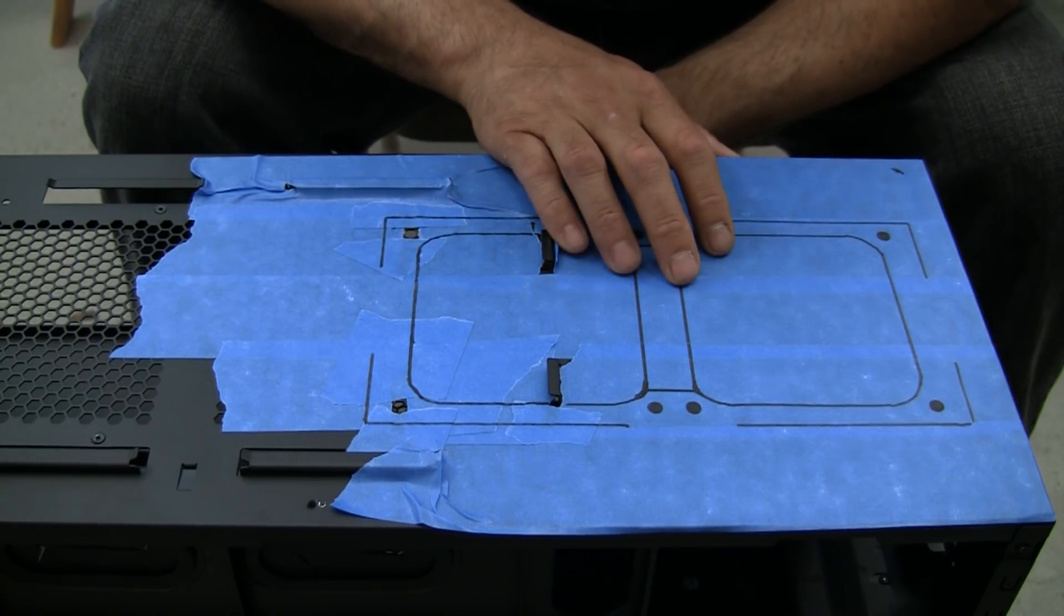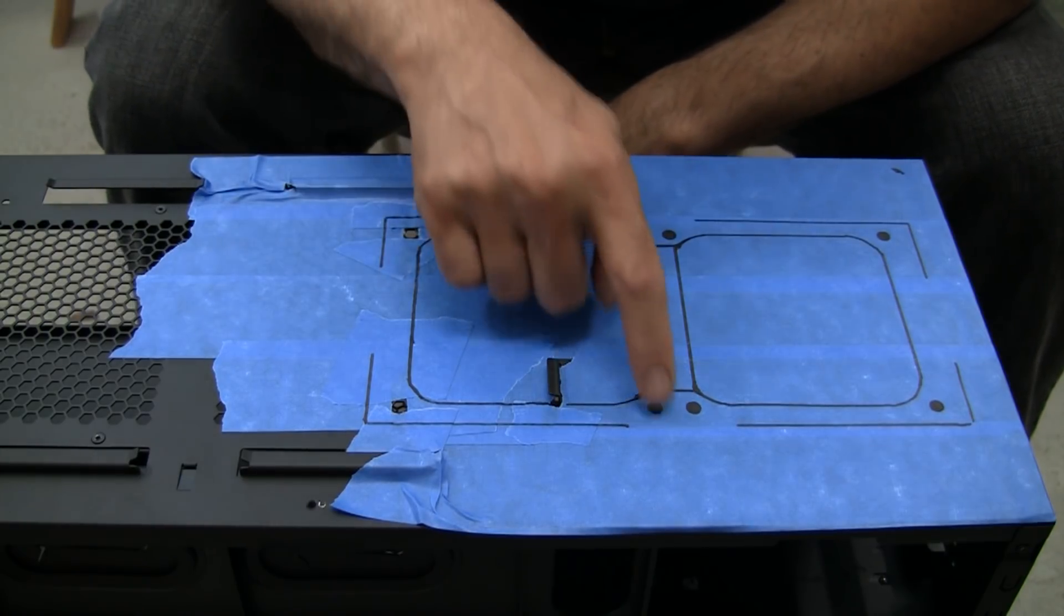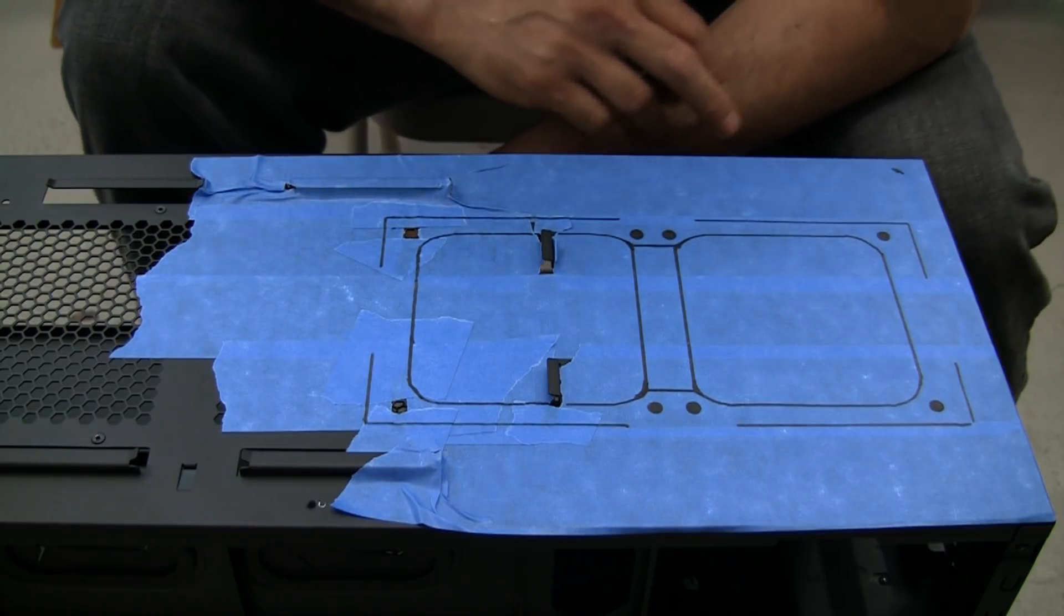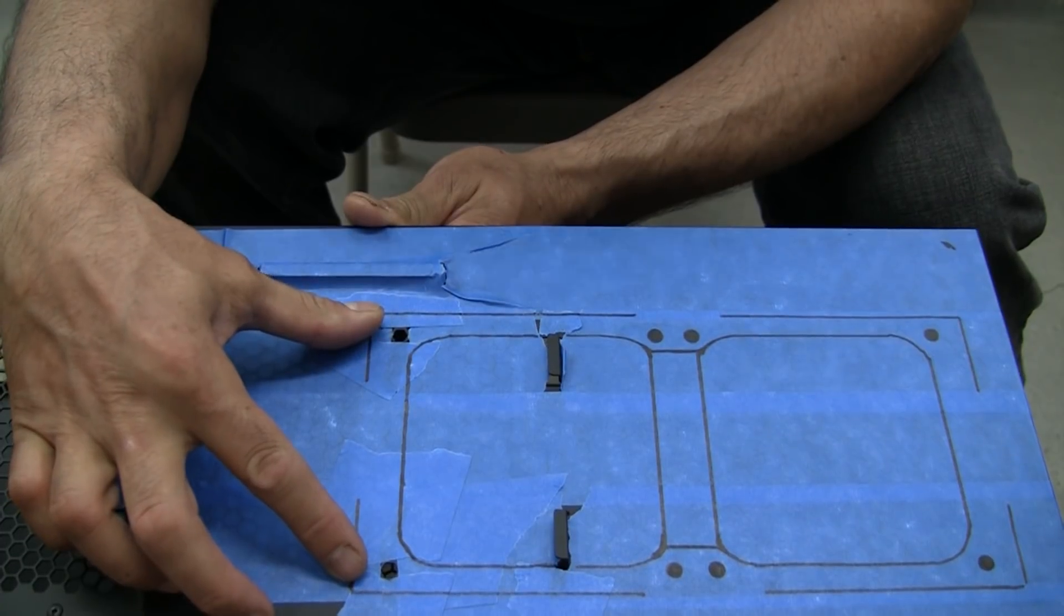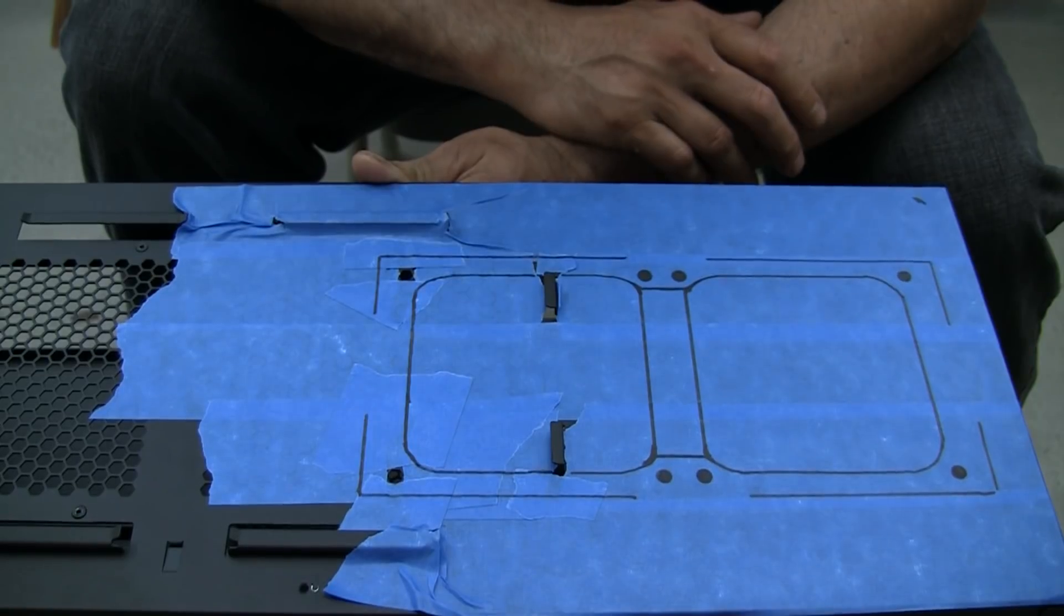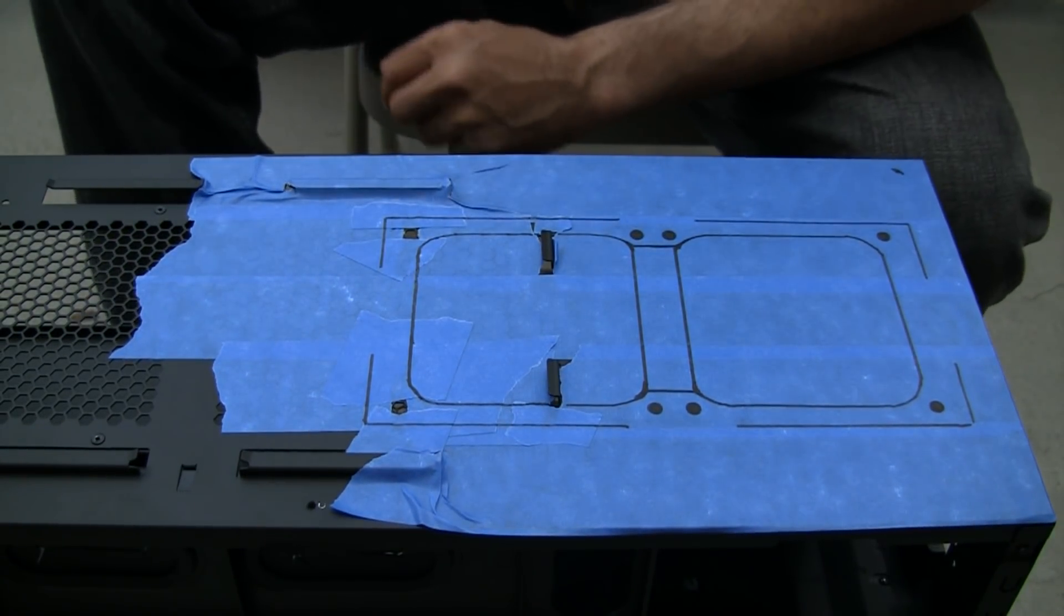We'll have to use the Dremel to start the hole, but first we're going to drill out these other six holes. As you can see, I left these two here, I didn't cover them with tape, because that was my guide for where I wanted to set this template. Let me go ahead and set up the drill and we'll see how this goes.